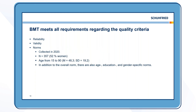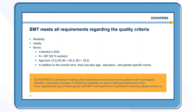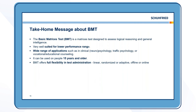BMT also has up-to-date norms collected in 2020. 357 people between the ages of 15 and 19 were included in this norm. In addition to the overall norm, there are also age-, education-, and gender-specific norms available. We are also interested in adding more international and clinical norms, as well as child and adolescent norms — so if you would like to contribute to this norming process, please feel free to contact us.